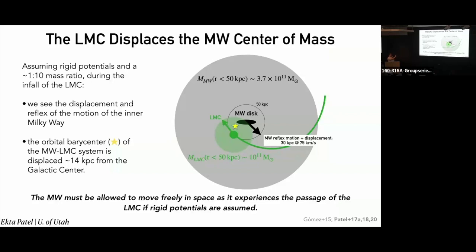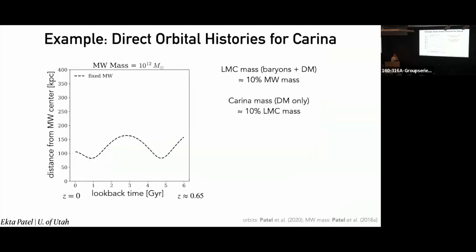This is just in the rigid potential assumption — you can think of these two things as spheres with moving centers of mass. As we make these kinds of dynamical models, we have to account for the fact that the Milky Way is responding to the passage of the LMC as it falls into the halo. I'm going to give a little example of how much that affects other substructures, because it has such a large impact on everything else orbiting the Milky Way.